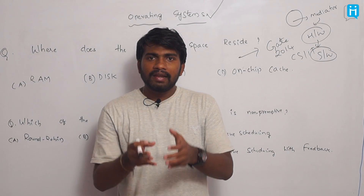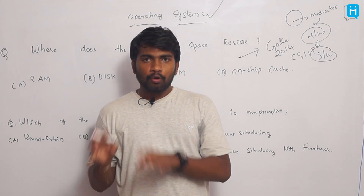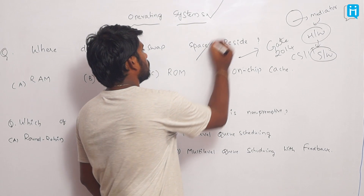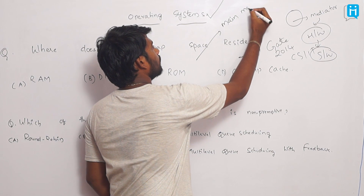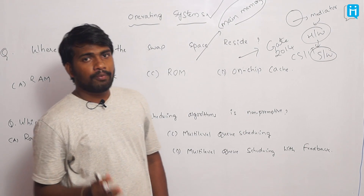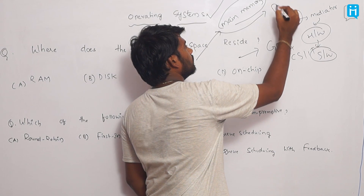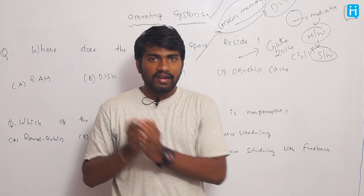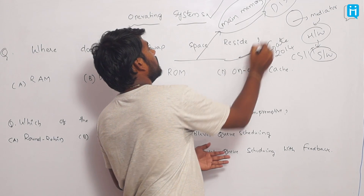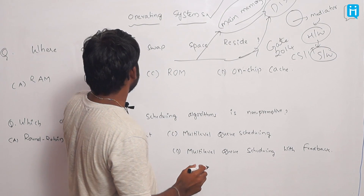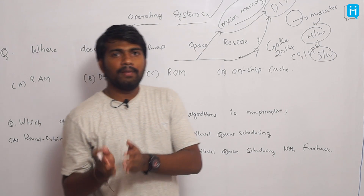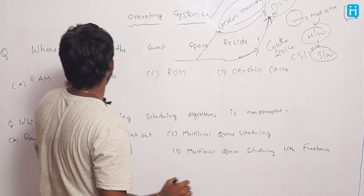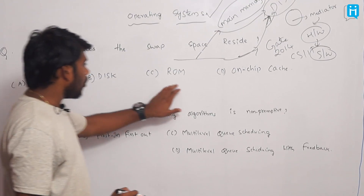When you take an operating system, there are a lot of applications installed on top of it. When you run any program on top of the operating system, a process is generated. The program which is present will not be stored in main memory — it is stored in temporary memory called disk. When the program is needed, it is taken from the disk. So swap space is the memory allocated over the disk.